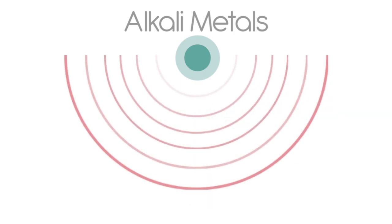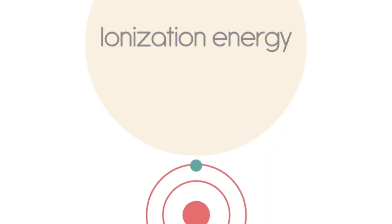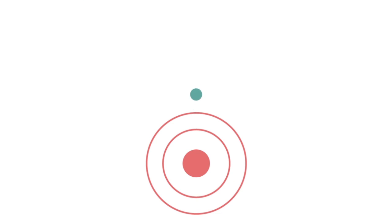So the greater the shielding, the easier it is to lose an electron to form an ion. The term ionization energy is used to describe the amount of energy required to remove an outermost electron from an atom. Increased shielding means that ionization energy is decreased.